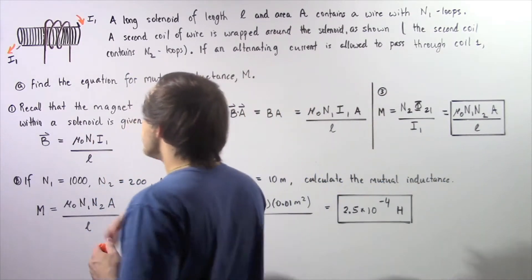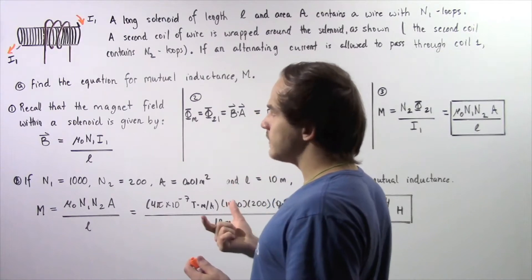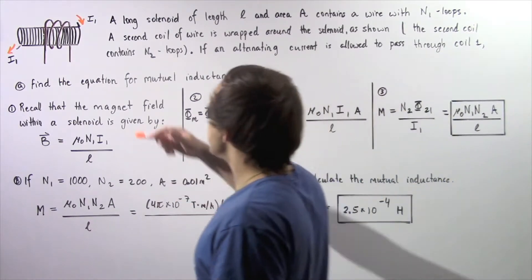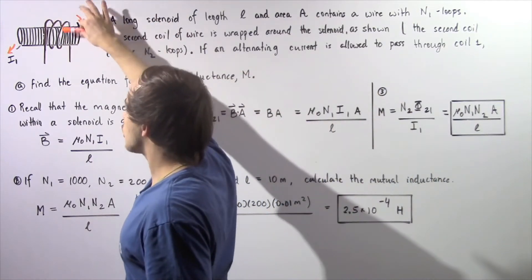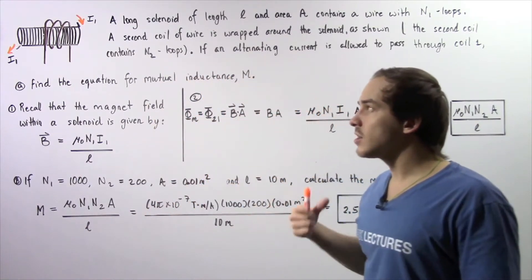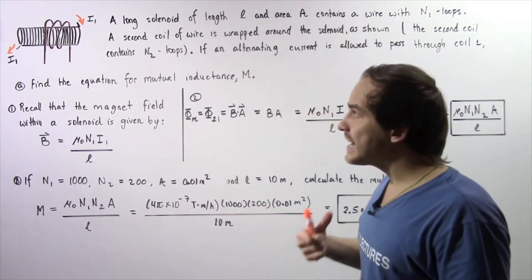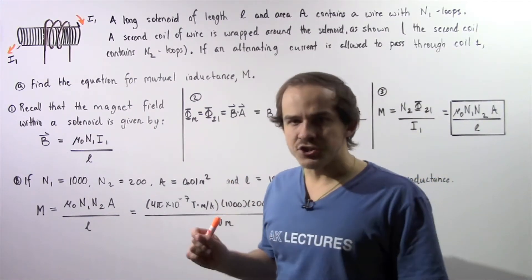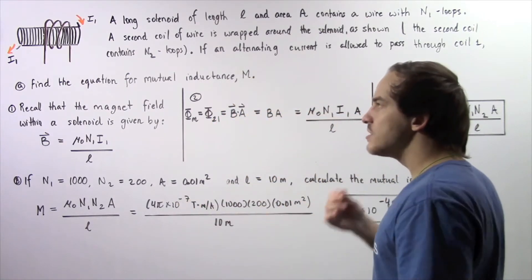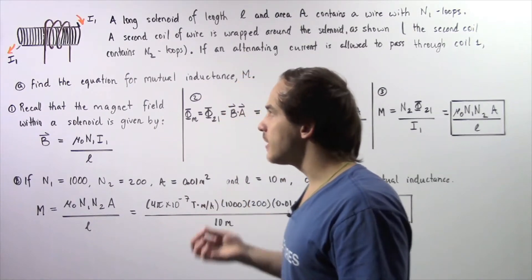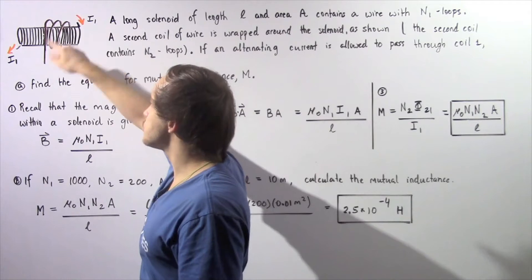Let's begin with part A by looking at the diagram to understand exactly what is taking place. We are given that a changing electric current is traveling through the coils of our solenoid — wire number 1. As our changing electric current travels, it creates a magnetic field. Because the current is changing, the magnetic field will also be a changing magnetic field. Because our magnetic field is changing inside the solenoid, it will create a changing magnetic flux. Assuming the coils of the solenoid are closely packed, the changing magnetic flux produced by the solenoid will equal the changing magnetic flux that travels through the wires of coil number 2.